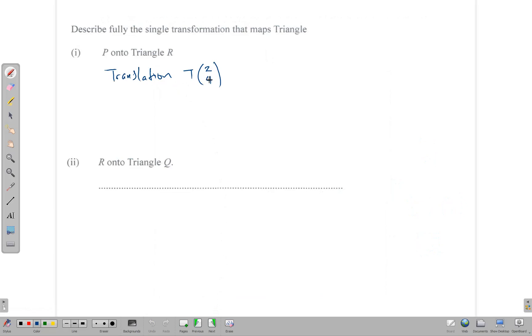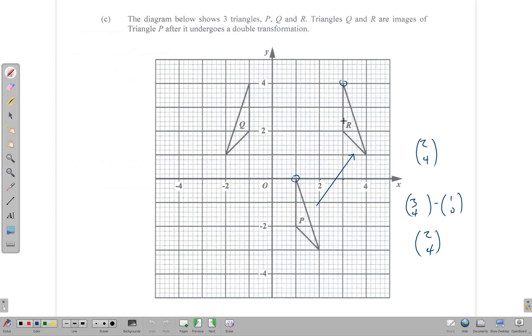So now that we have answered that our transformation is a translation T(2, 4), how does triangle R get onto triangle Q? That's the next question. Looking at R and Q, you realize that they are facing each other. This side is facing that side, and that is a hint telling you that this is a reflection.